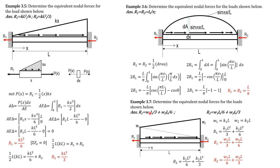Remember that the sum of the equivalent nodal forces equals the area of the load diagram. For a uniform rectangular loading of intensity w (in N/mm), the equivalent nodal forces at both ends are equal. Since the total area is simply w times l, we get r1 = r2 = wl/2 for that case.